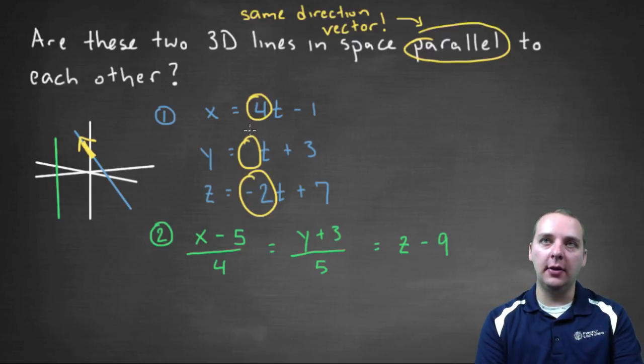Because if you remember in the parametric form of a line you had AT plus X naught, BT plus Y naught, CT plus Z naught. And the A, the B, and the C was the direction vector, where the X naught, Y naught, Z naught was some point on the line. And that's really irrelevant to telling if they're parallel or not.